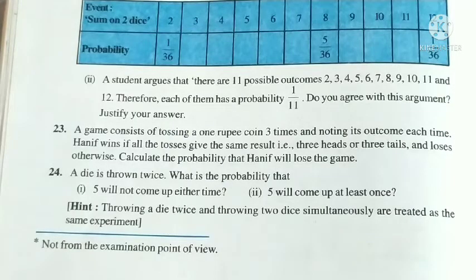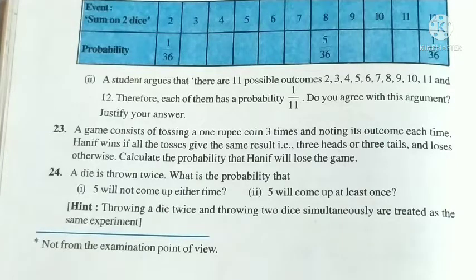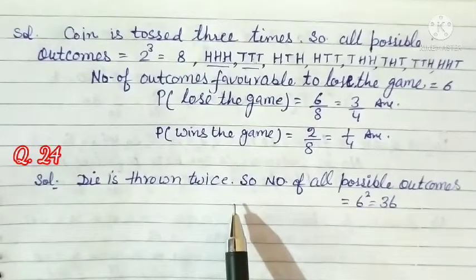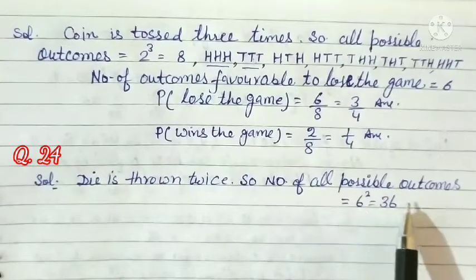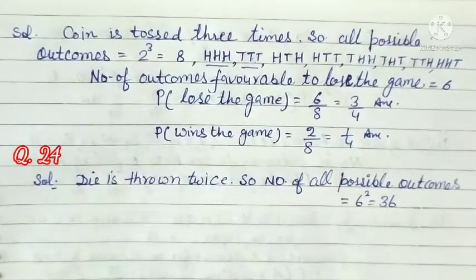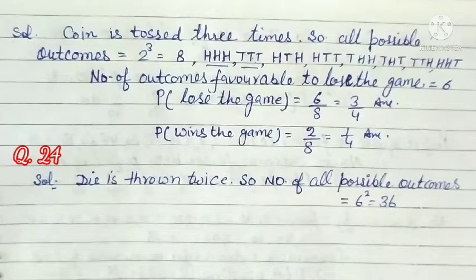A die is thrown twice. What is the probability that: (1) 5 will not come up either time, and (2) 5 will come up at least once? When a die is thrown twice, the number of all possible outcomes = 36. It should be understood that whether one die is thrown twice or two dice are thrown simultaneously, the total number of possible outcomes is always 36.